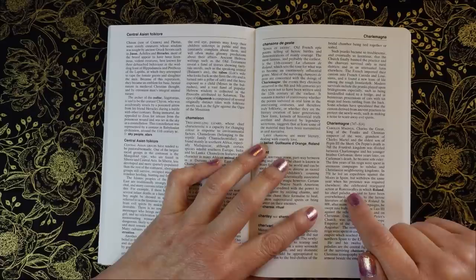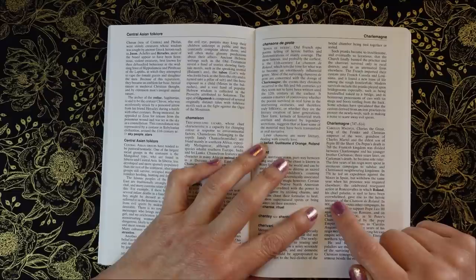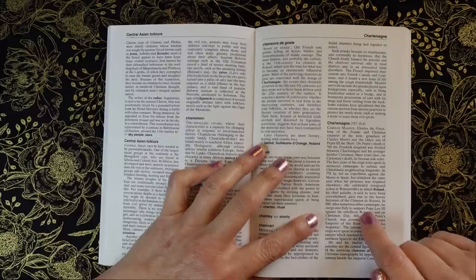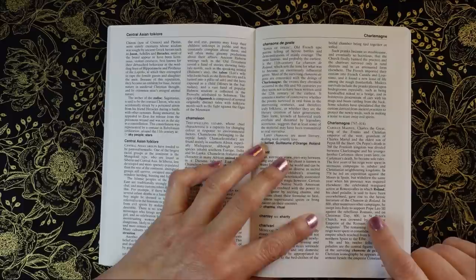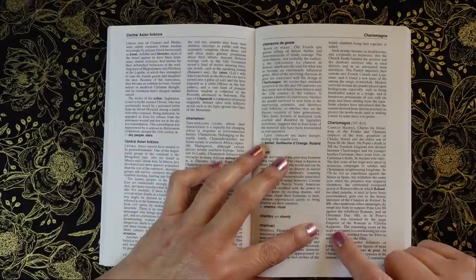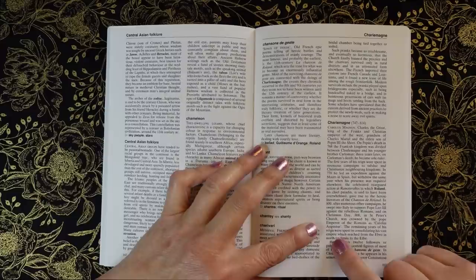In 778, he led an expedition against the Moors in Spain, but withdrew the same year when his presence was required elsewhere. The celebrated rearguard action at Roncesvalles, in which Roland, his chief paladin, said to have been overwhelmed, gave rise to the heroic literature of the Chanson de Roland. In 800, after numerous other campaigns, he swept into Italy to support Pope Leo III against the rebellious Romans, and on Christmas Day 800 in St. Peter's Church, was crowned by the Pope, Emperor of the Romans, as Carolus Augustus. The remaining years of his reign were spent in consolidating his vast empire, which reached from the Ebro in northern Spain to the Elbe.